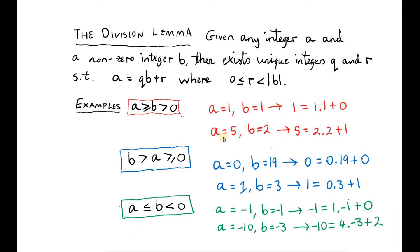Let's look at some examples. Suppose a is 5 and b is 2. There's a unique pair of integers q and r so that we can write 5 as q times b plus r. We have to choose q equal to 2 — we've no other choice — and then r will equal 1. Notice that r is non-negative: 1 is non-negative, and 1 is less than the magnitude of b, since 1 is less than 2.